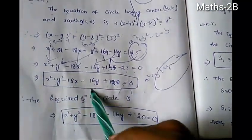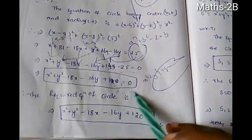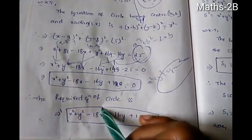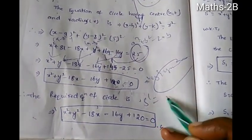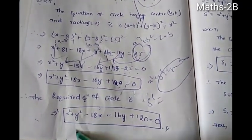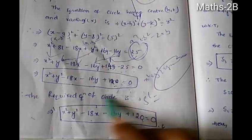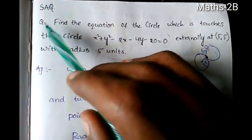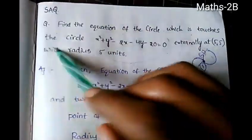Therefore x² + y² - 18x - 16y + 120 = 0. So the required equation of the circle is S' = x² + y² - 18x - 16y + 120 = 0. This is how to find the equation of the circle which touches the given circle.